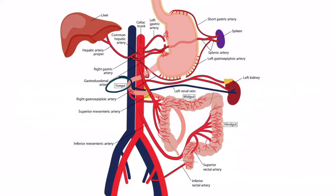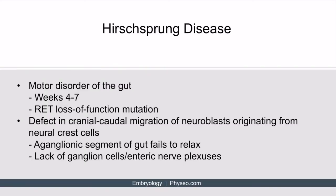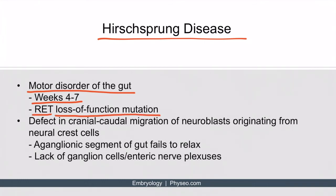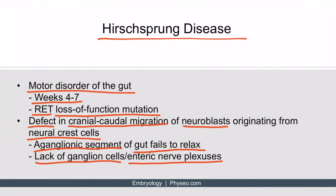Now that we've discussed foregut pathology including the formation of the spleen and the pancreas, let's discuss hindgut pathology as it relates to embryology. The only disease we'll cover here is Hirschsprung disease, a motor disorder of the gut. The developmental process usually occurs between weeks four to seven. This condition is thought to result from the RET gene having a loss-of-function mutation. What happens is there's a defect in cranial-caudal migration, specifically of the neuroblasts which originate from the neural crest cells. Since neural crest cells move caudally, the rectum is usually the part of the developing GI tract impacted when these neuroblasts fail to migrate. Therefore, the lowest part of the GI tract lacks ganglia — an aganglionic segment — and without those ganglia, the gut tube will fail to relax. There is a complete lack of ganglion cells and enteric nerve plexuses.